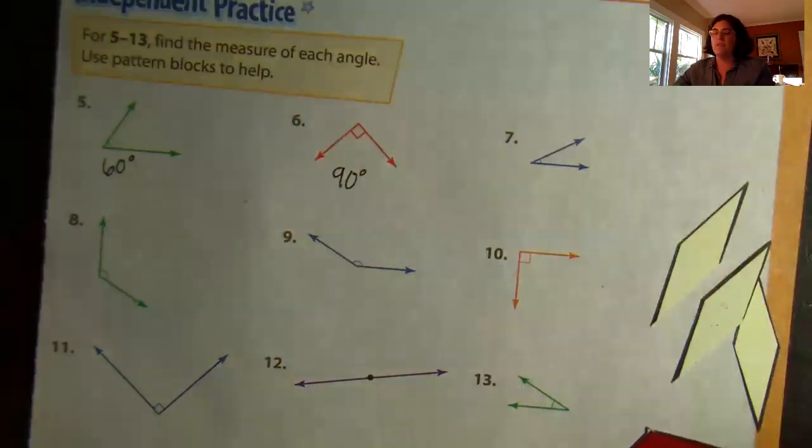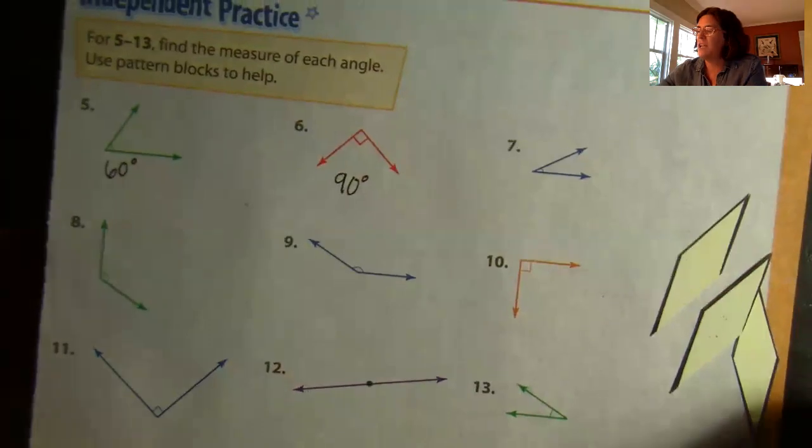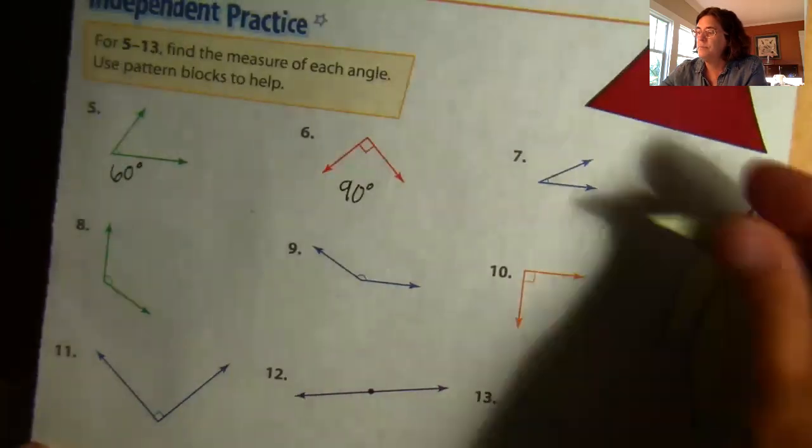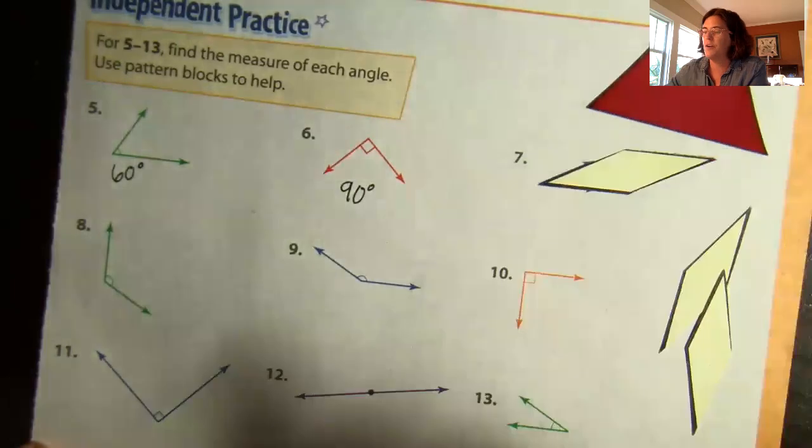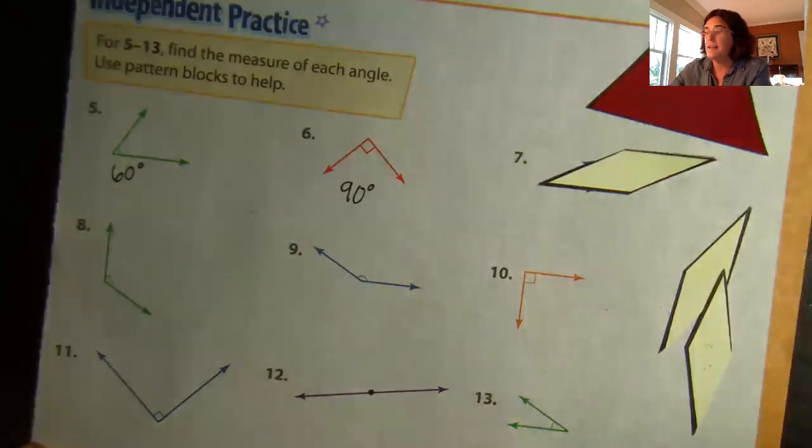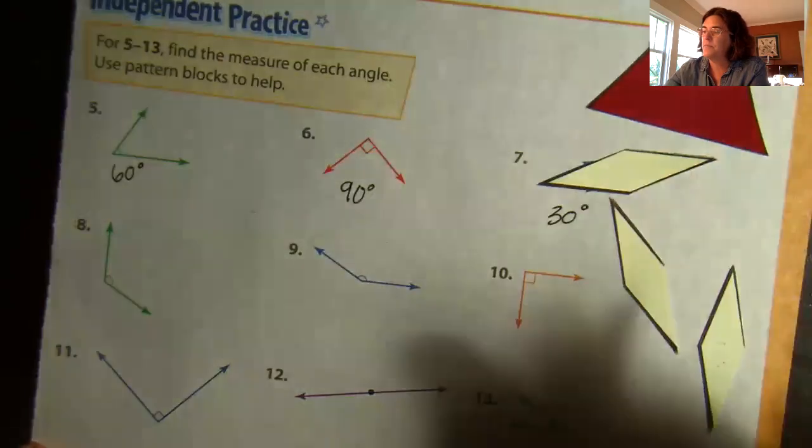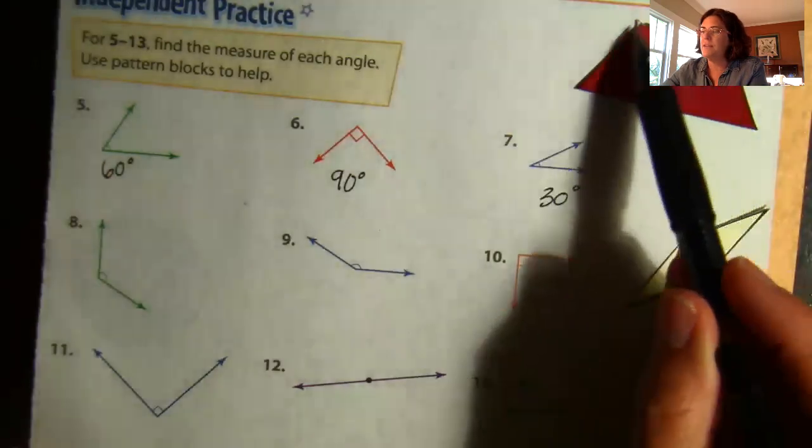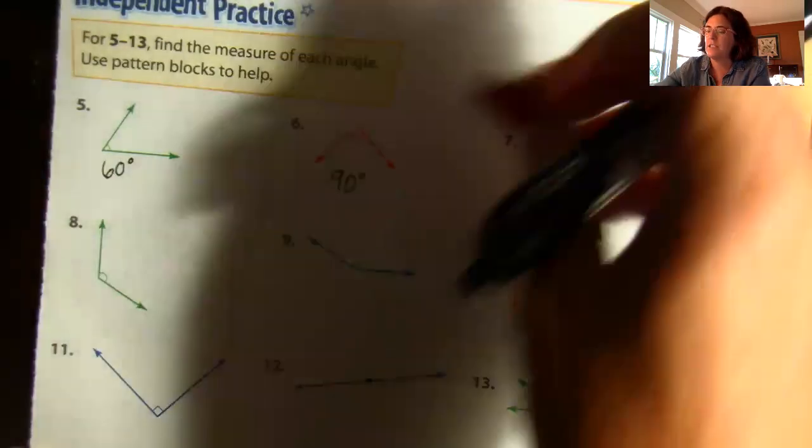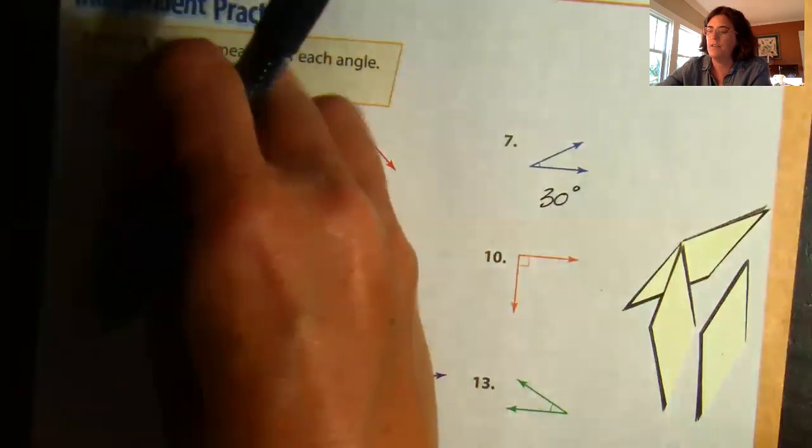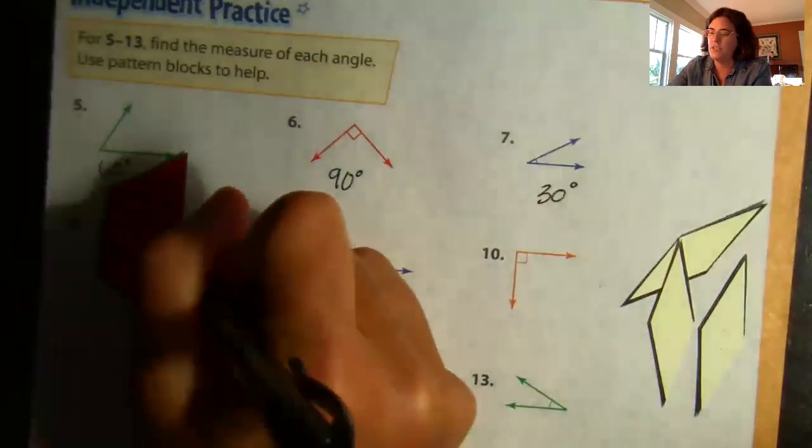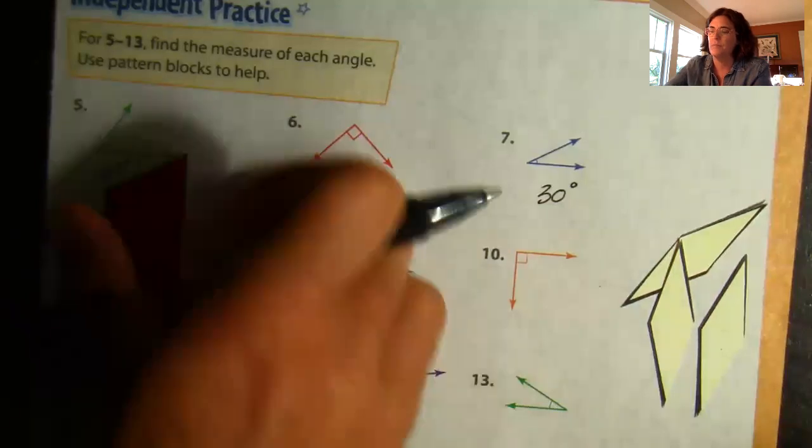All right, let's move on. I look at number seven. It's a very small angle, and out of the angles in my shapes, I know that the tan pattern block has the smallest angle, so I'm gonna try that one first. And I see, yep, that fits perfectly, and I know from earlier that that small angle is 30 degrees. All right, let me take a look at this one, number eight. That's a pretty big angle. It looks like it might be the same as the bigger angle on my trapezoid. Let's try it. It is perfect. Good job. And now I'm gonna look and check on my paper. It says that that angle is 120 degrees. Very good.